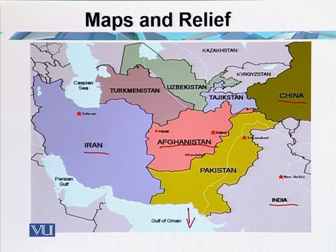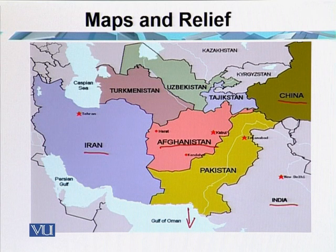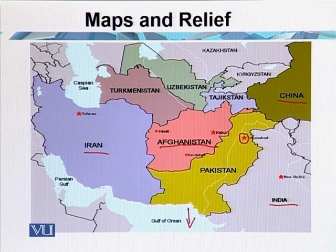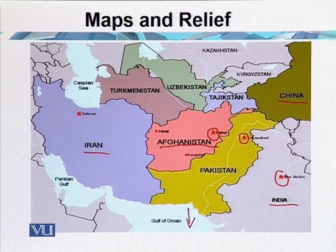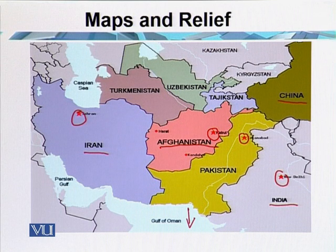We can see different themes on this map, such as Pakistan's capital Islamabad, Afghanistan's capital Kabul and its location, India's capital New Delhi, and Iran's capital Tehran. So these kinds of capitals can be highlighted on the map.